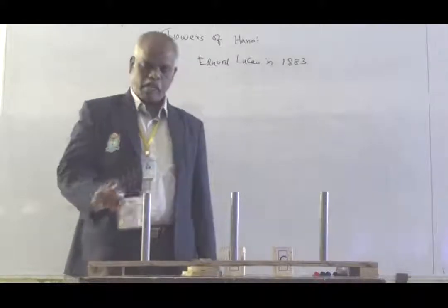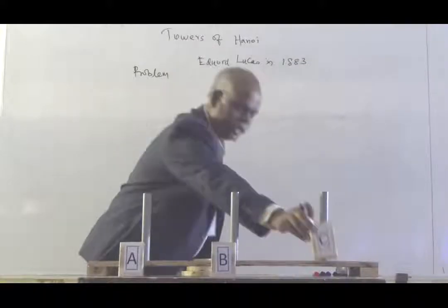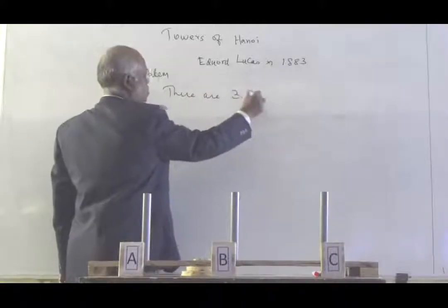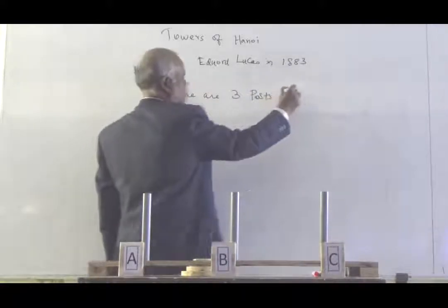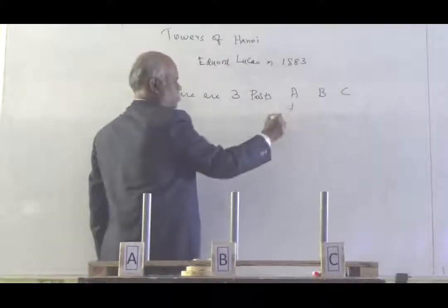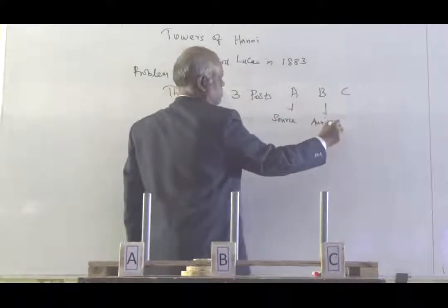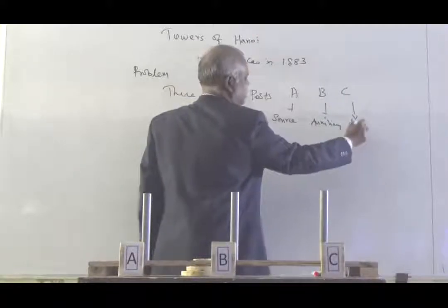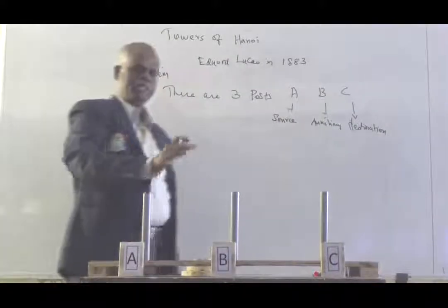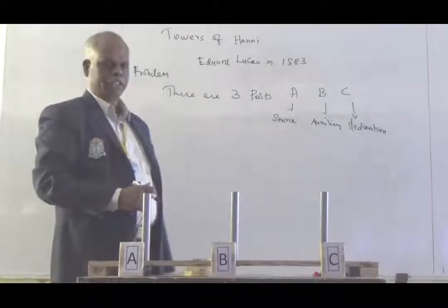The first post I call it as A, the second post I call it as B, and the third post I call it as C. So A is defined as the source, B is the auxiliary, and C is the destination.